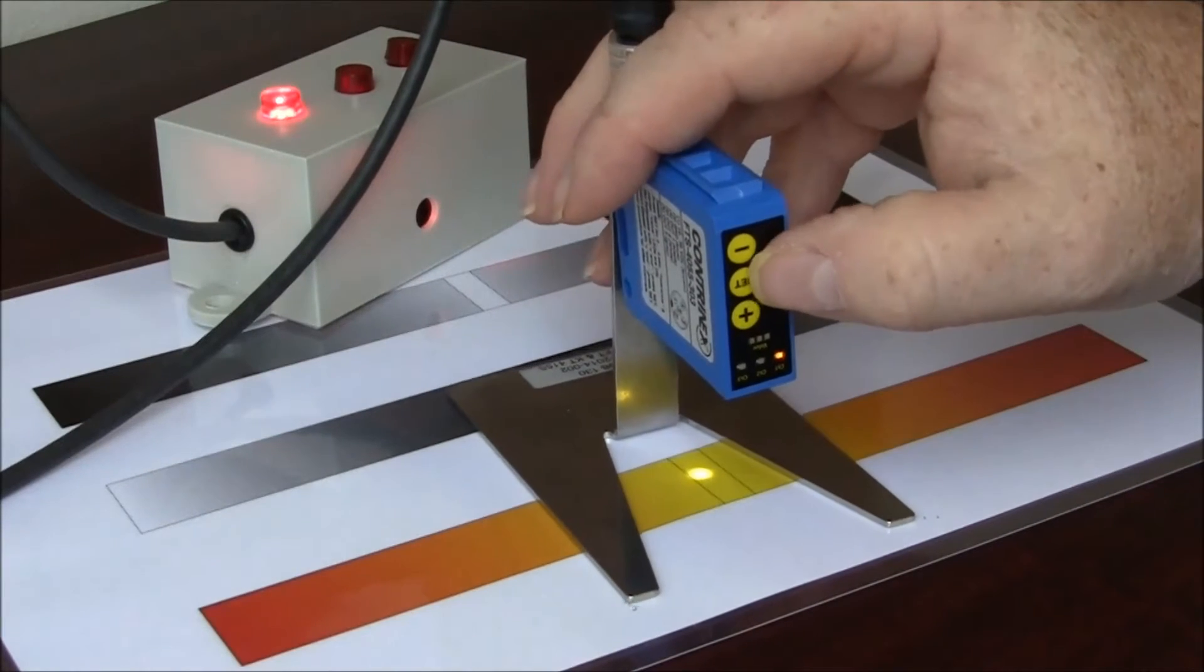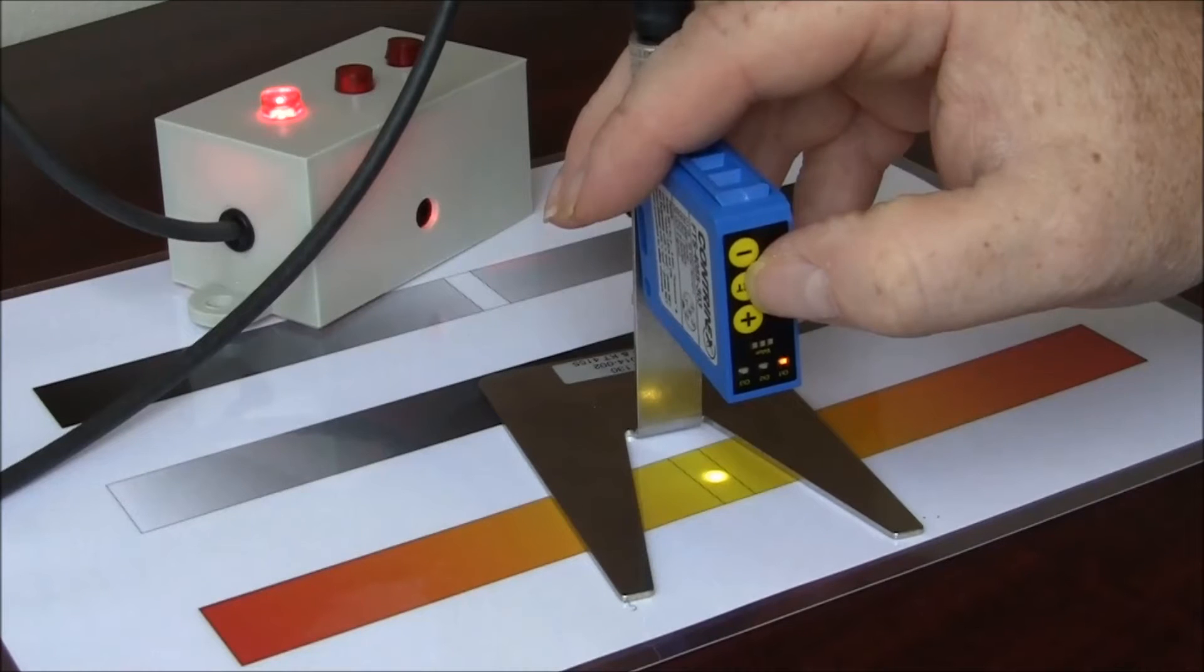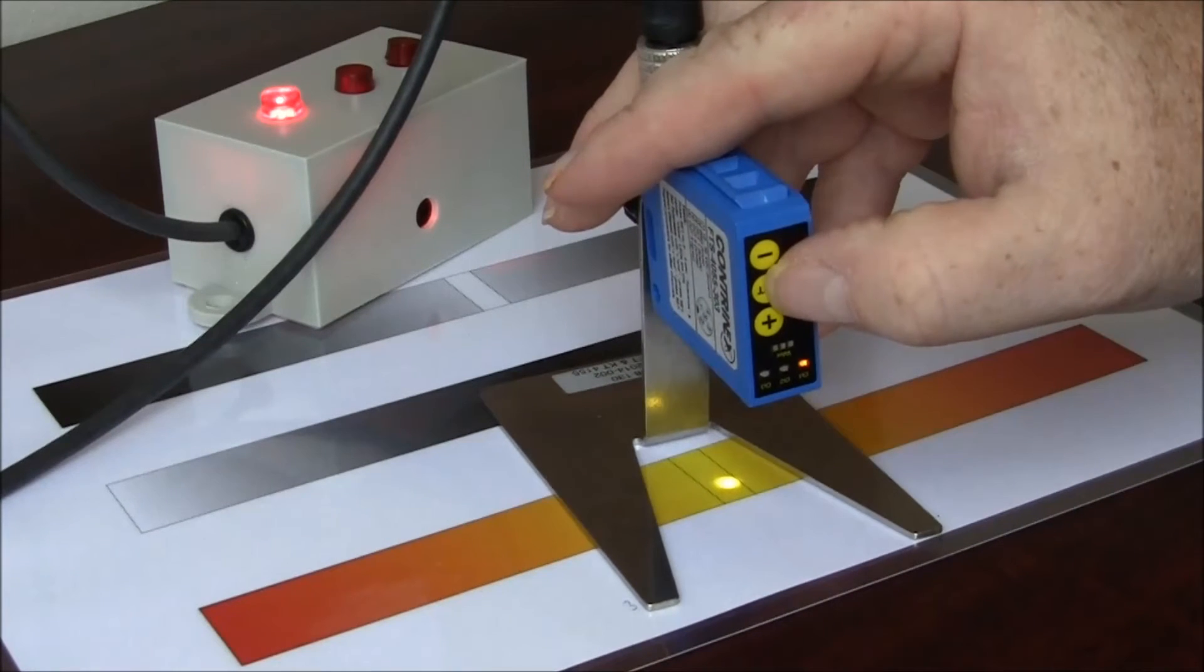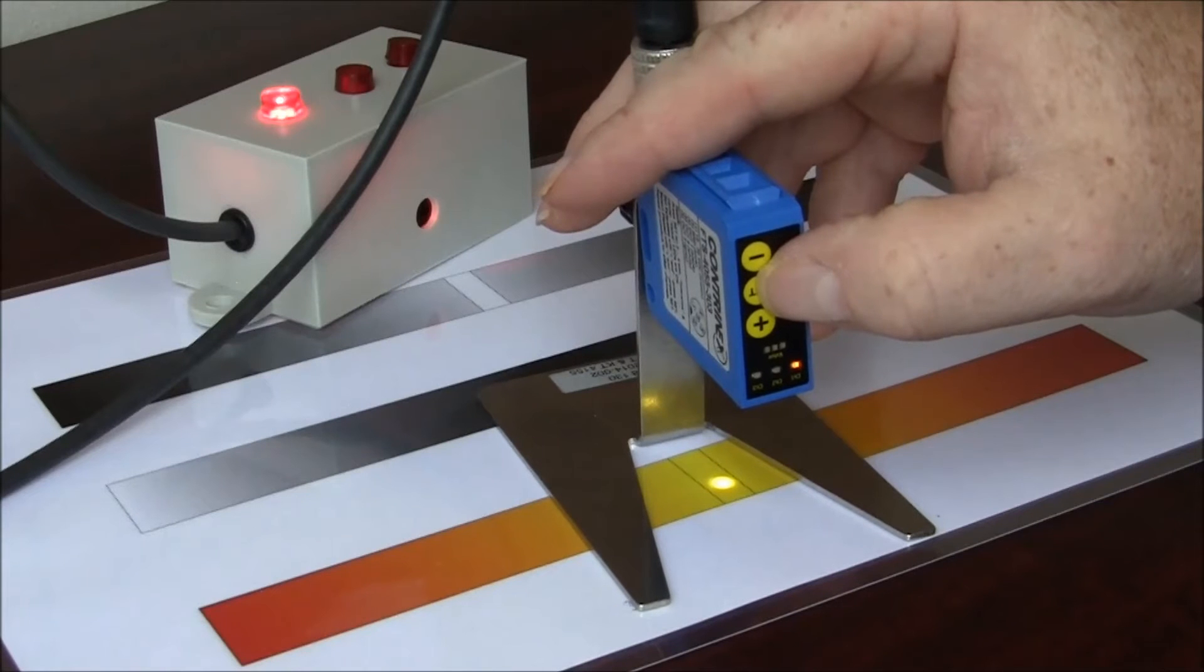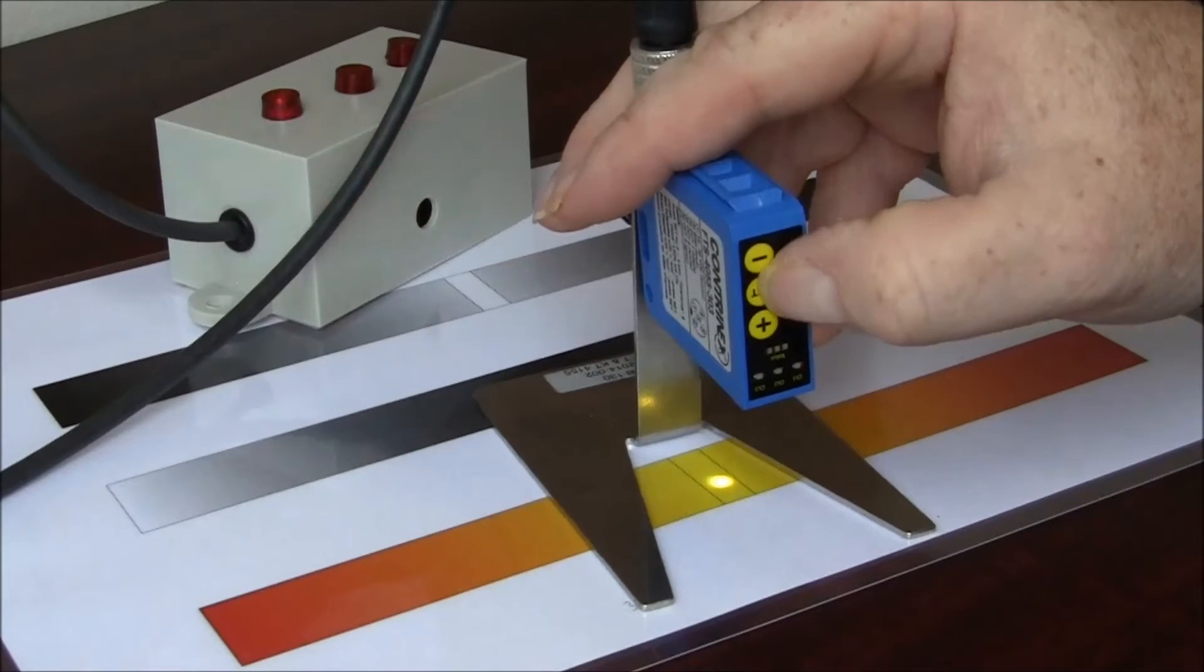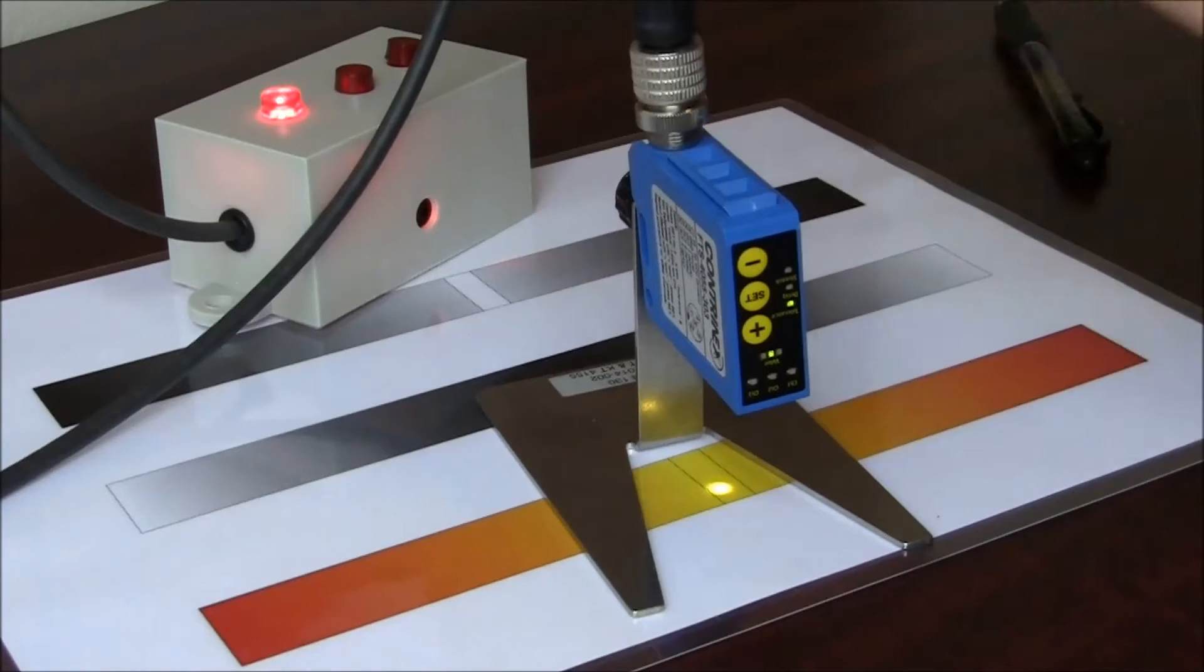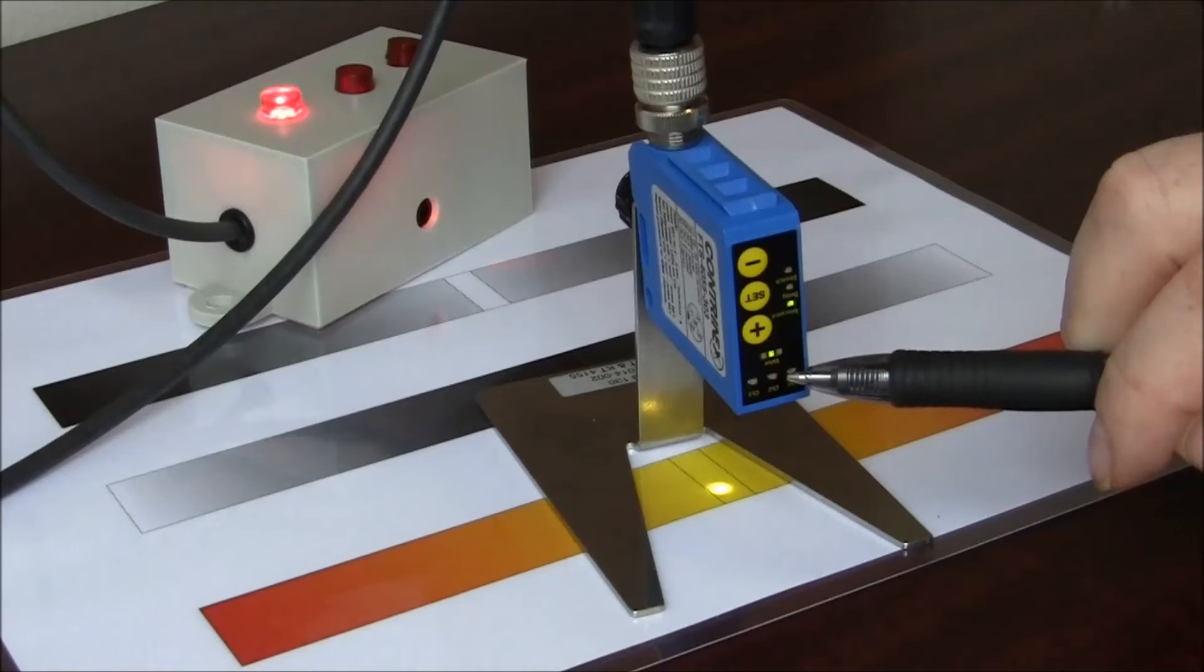To set this sensor, you're going to press and hold the set key for 2 seconds until all 3 of the channel lights blink, and then release. And you set this on the target. I released it. It immediately comes up with the value for the tolerance. It comes up at 3.